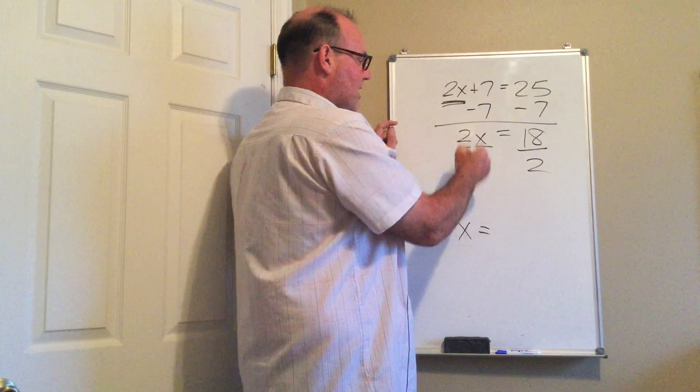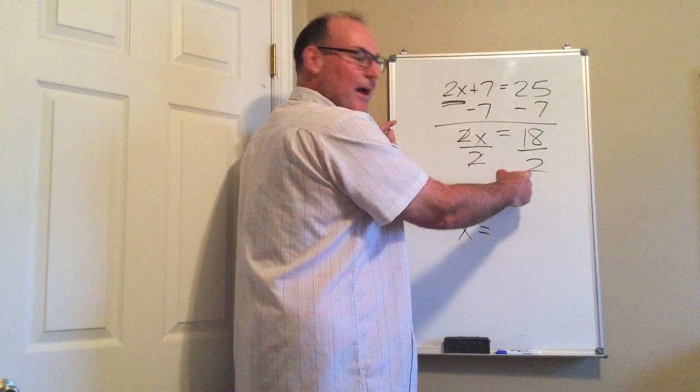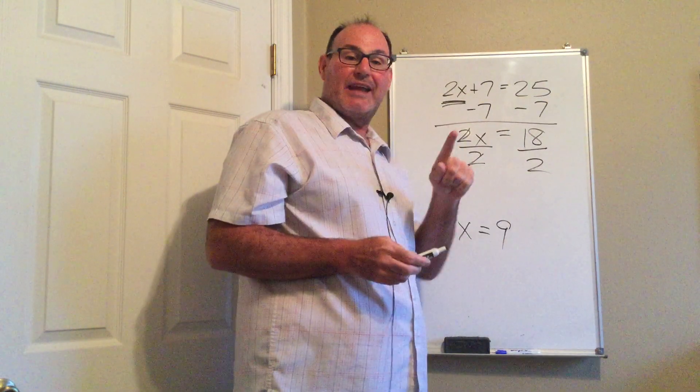Now what I have over here is 2 divided by 2 leaves me 1x. 18 divided by 2 is 9. 9 is our solution.